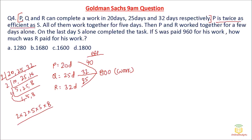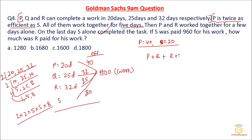There is one more person S. P is twice as efficient as S. Since P's efficiency is 40, S's efficiency will be 20 units per day — because P's efficiency is 2 times that of S. Now all of them — P, Q, R and S — start work together for the first 5 days. P does 40, Q does 32, R does 25 and S does 20 units per day. Their combined efficiency is 117 units per day.